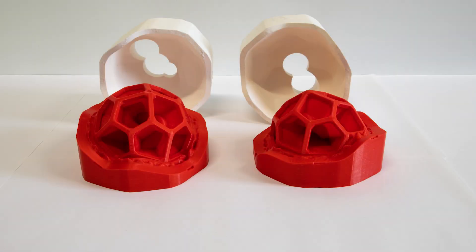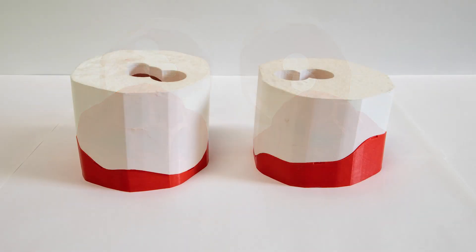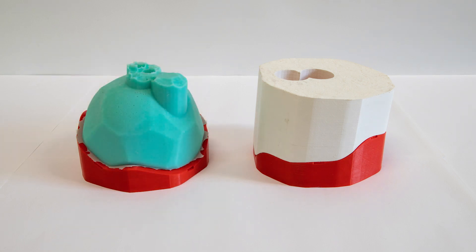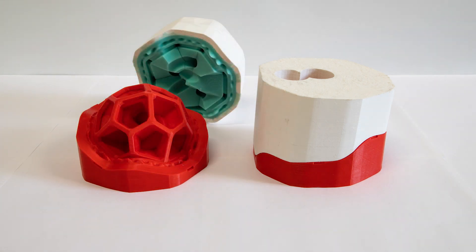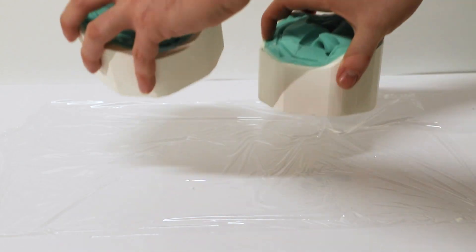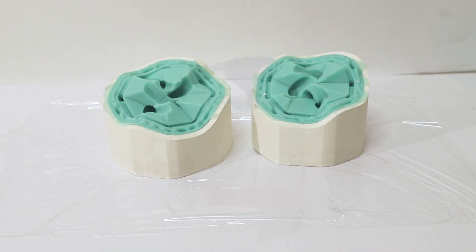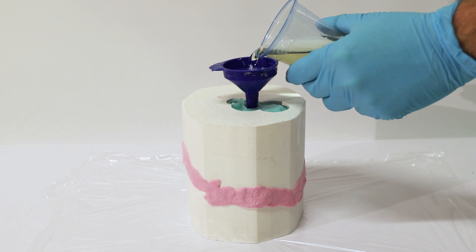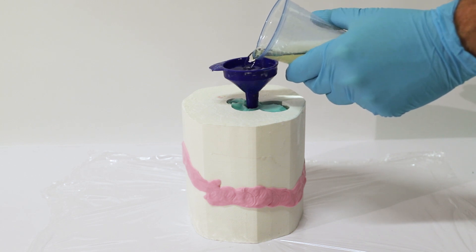The silicone mold parts are created by pouring liquid silicone into automatically designed 3D printed containers. Objects are fabricated by pouring casting material into the cavity between the two composite mold pieces.